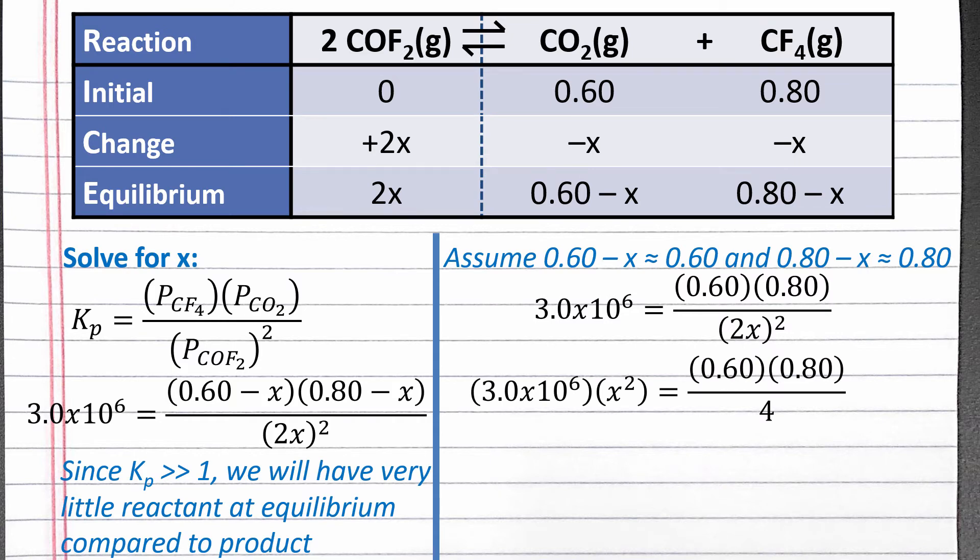Next, we can divide both sides of the equation by 3.0 times 10 to the 6th, and take the square root of both sides, which is the same as raising both sides to the power of 1 half. Completing this calculation, we should get 2.0 times 10 to the negative 4 for x.